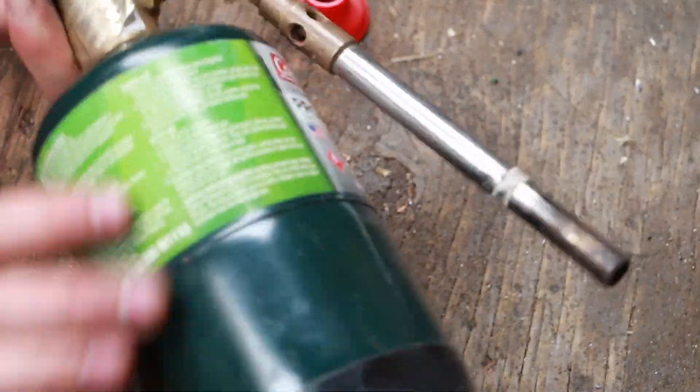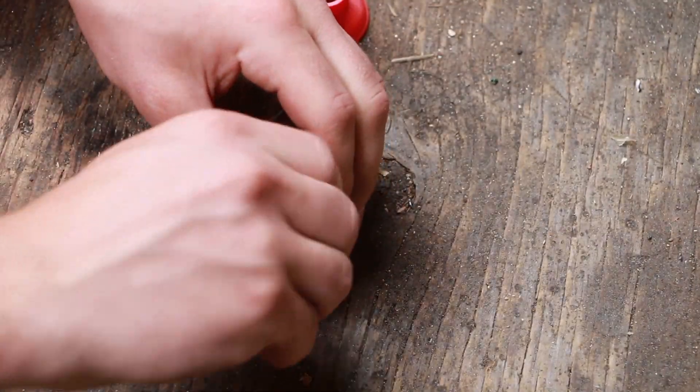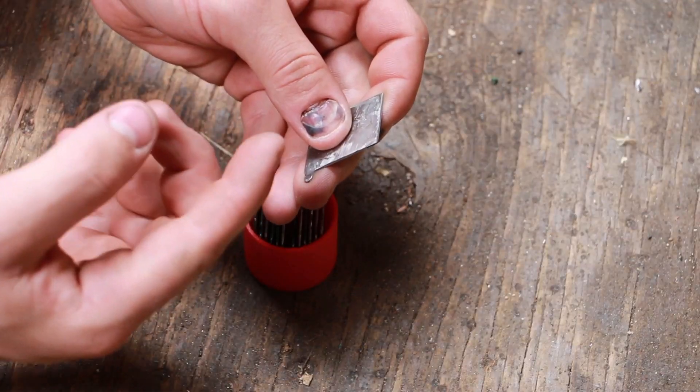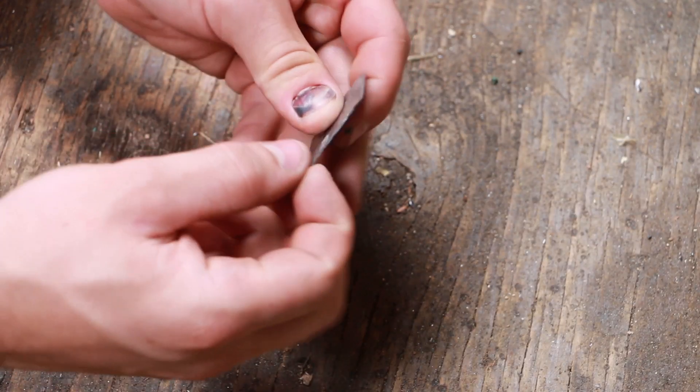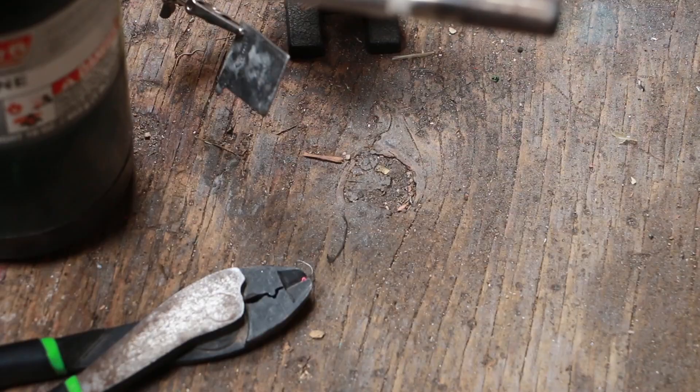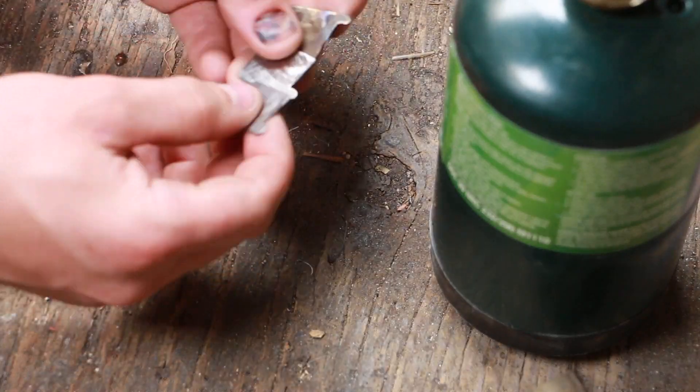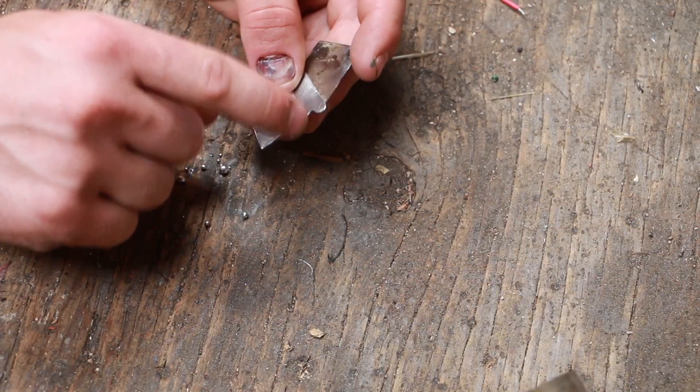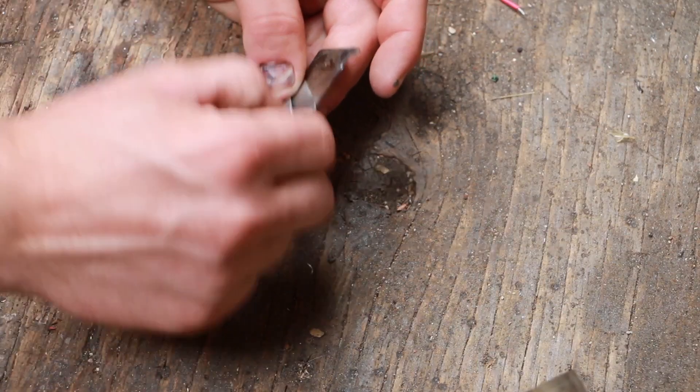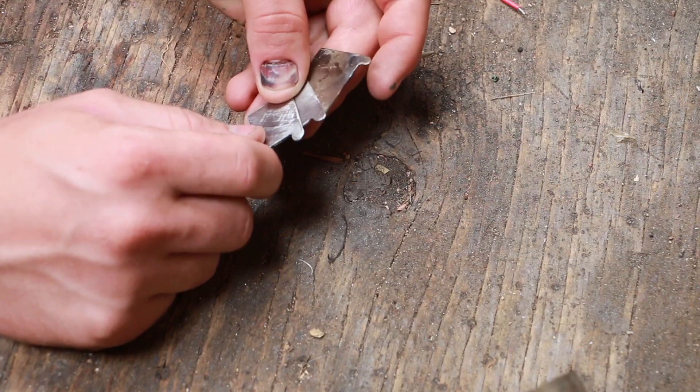I'm going to take a propane torch here, heat up the ends of them, and then see if I can't put some solder on there and bond it right to the end. All right. So that did not work. I'm going to try to copper plate these now and try to solder to the copper opposed to trying to solder to this.